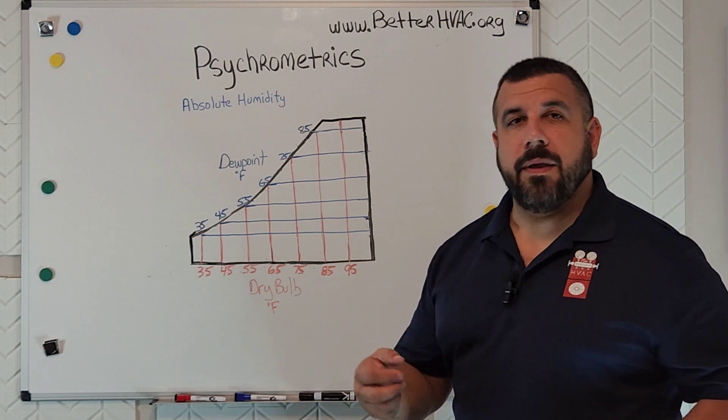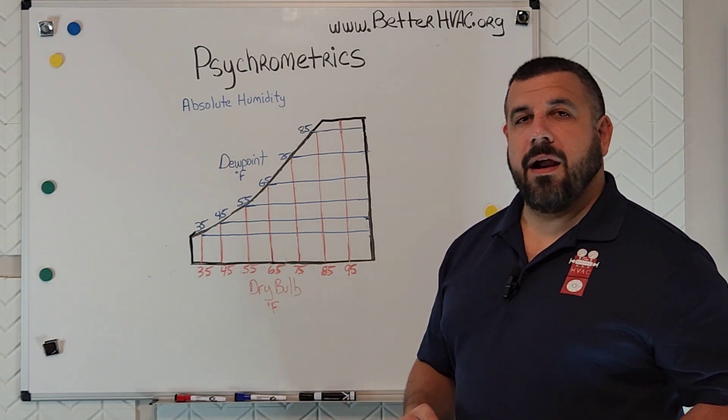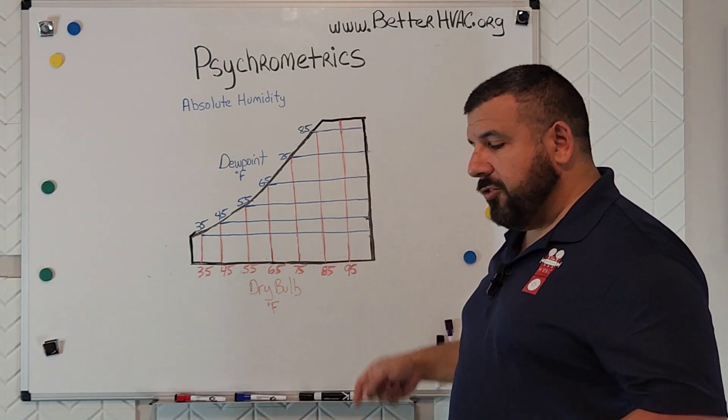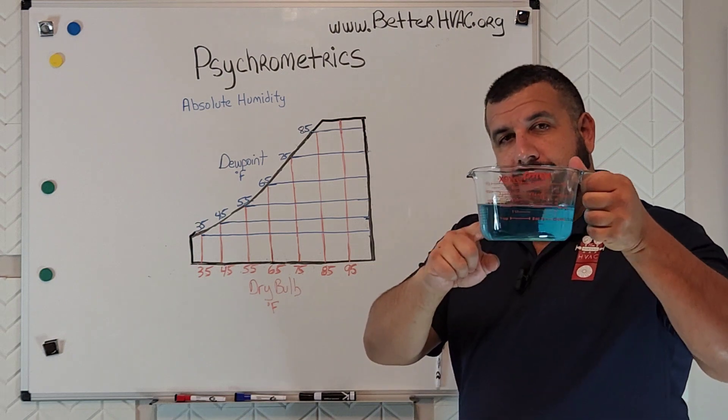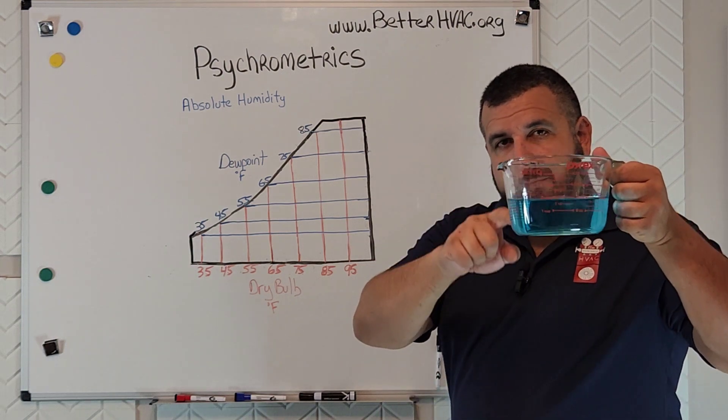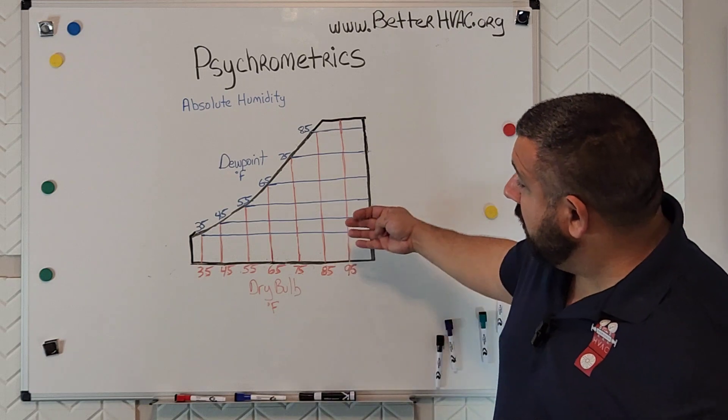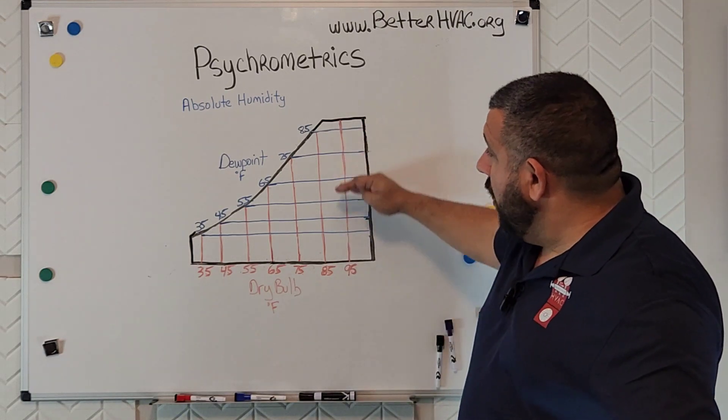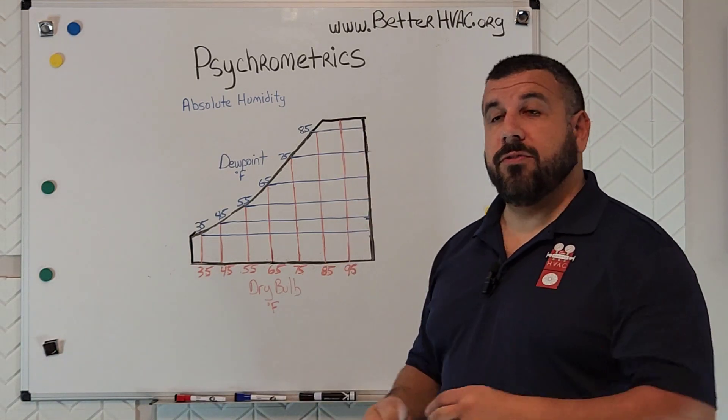Last time we introduced the topic of moisture in the air. And if we think about the psychometric chart like a container of water, the higher our water level is in our container, the more moisture is in it. Same thing in our chart, the higher we are in this chart, the more moisture is in the air.